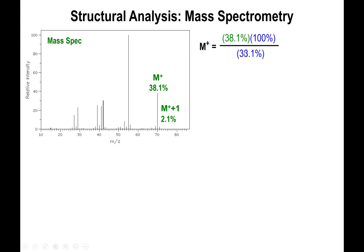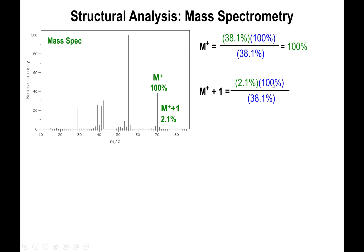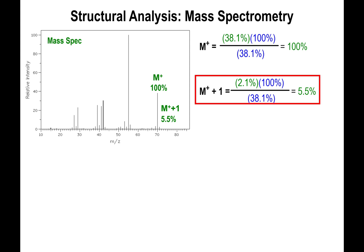To scale the M+ peak to 100%, we divide it by itself and multiply by 100. For the M+1 peak, we take the 2.1% and divide it by 38.1 — not by 2.1 — because we're scaling the entire mass spectrum based on the M+ peak. So 2.1 divided by 38.1, multiplied by 100, gives us 5.5%. The M+ peak is now 100% and the M+1 peak is recalibrated to 5.5%.